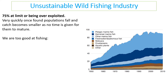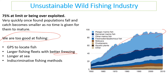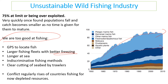Wild fishing is also extremely unsustainable. 75% of wild fish stocks worldwide are now at their limit or being over-exploited. This is happening because we are too good at fishing — the levelling-off effect is visible in catch data. We now use GPS to locate fish, have larger fishing fleets with better freezing, which means instead of going back to land once a week, fleets can spend two or three weeks at sea, freeze fish immediately, and return with bigger catches. Indiscriminate fishing methods — throwing nets overboard — catch everything, including bycatch. Some trawlers drag nets across the seabed, destroying habitat as well as catching fish.